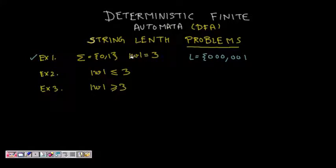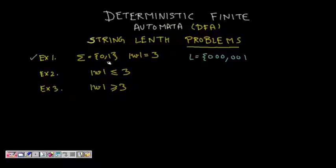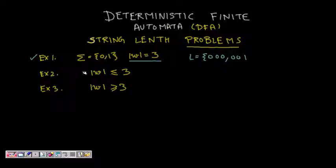In this lecture we are going to learn about some problems on deterministic finite automata where you have to design DFAs. Our first problem type involves string length. The alphabet is {0, 1} and the first case is that your string length should be exactly three. The next is to design a DFA that accepts strings whose length is less than or equal to three, and the final one is greater than or equal to three.